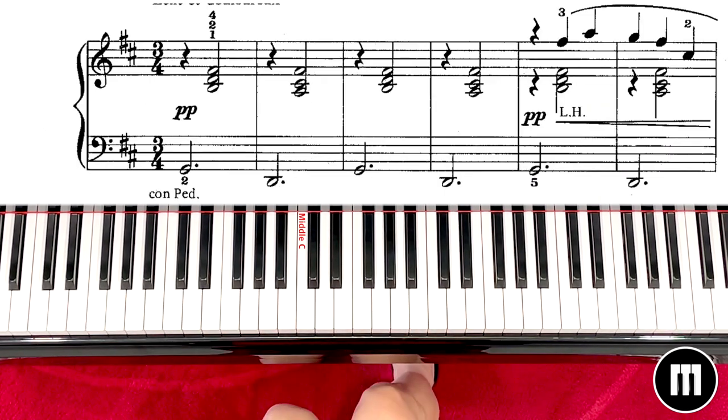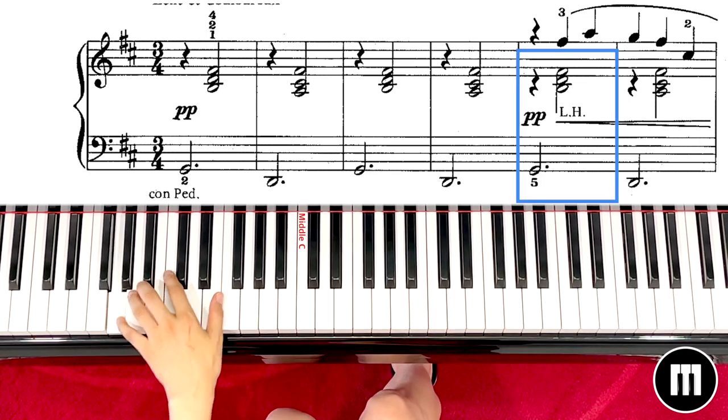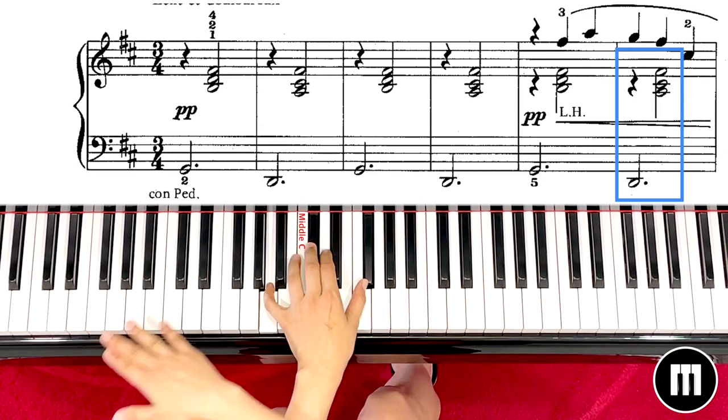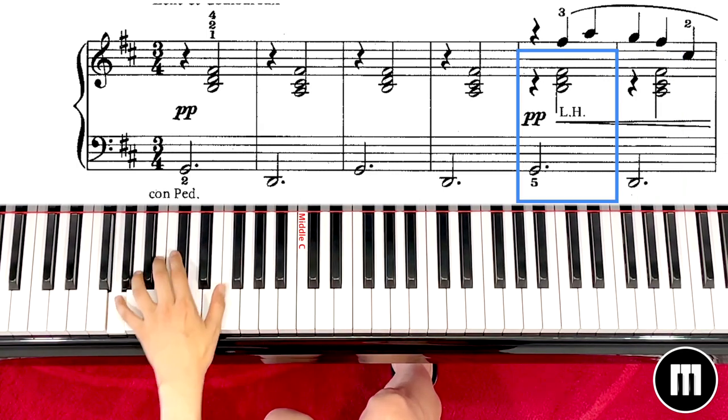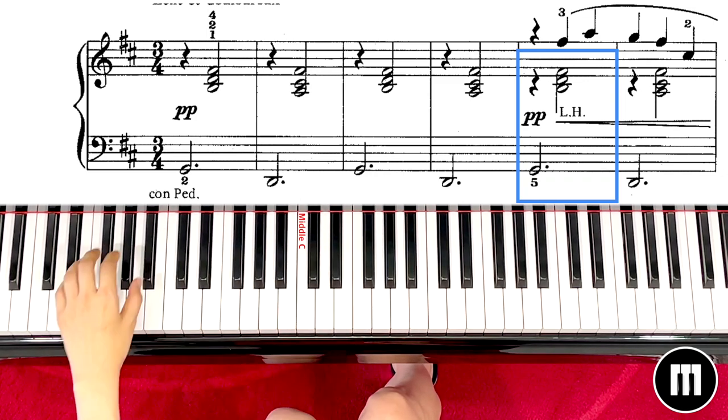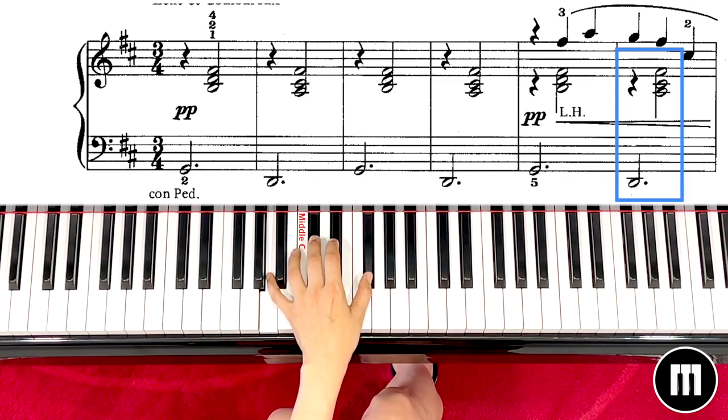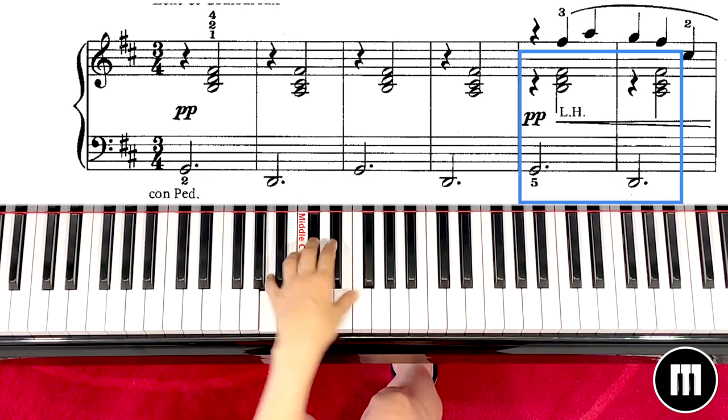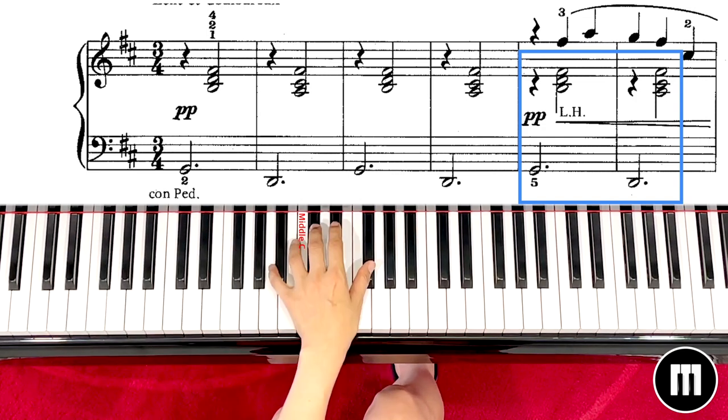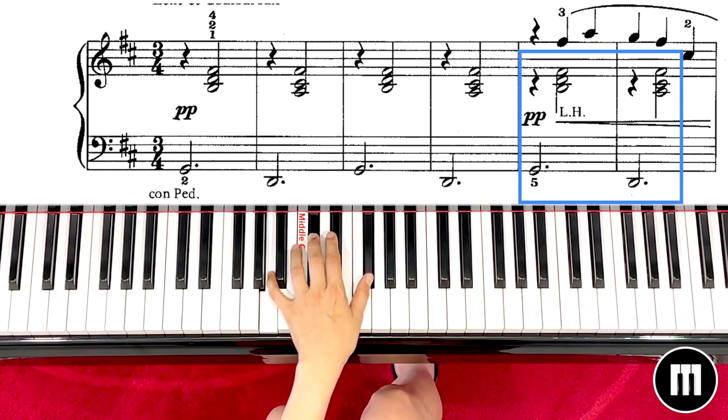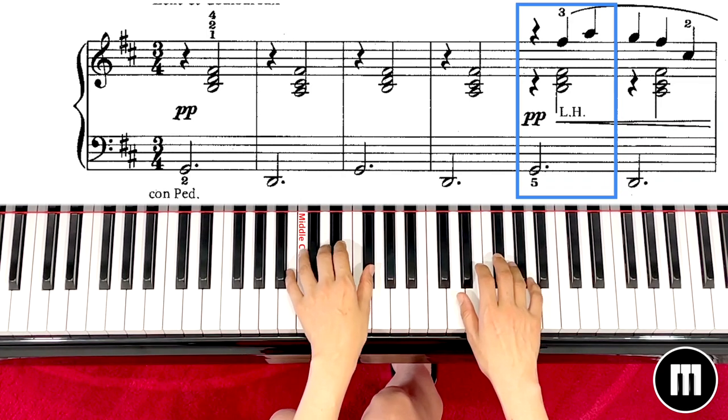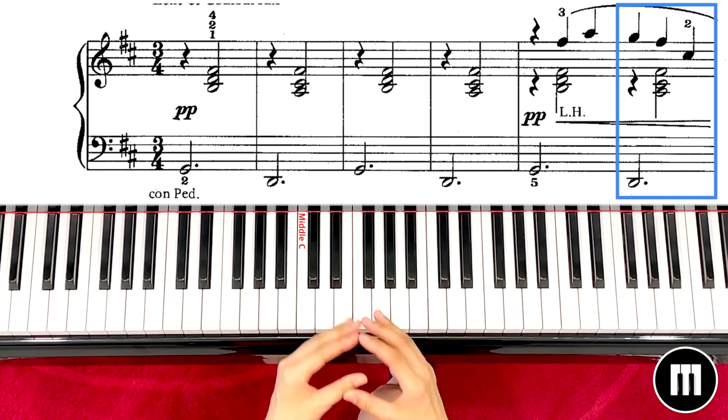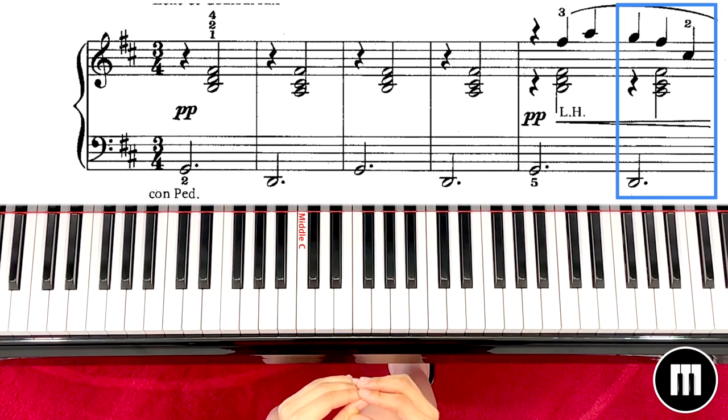So basically the hardest part is left hand changing chords. So you have to practice left hand only a couple of times. Like this, otherwise it's so hard to find your position. So you have to first practice the left hand a couple of times and then add your right hand above the bottom like this. Then it will sound much better and easy to play.